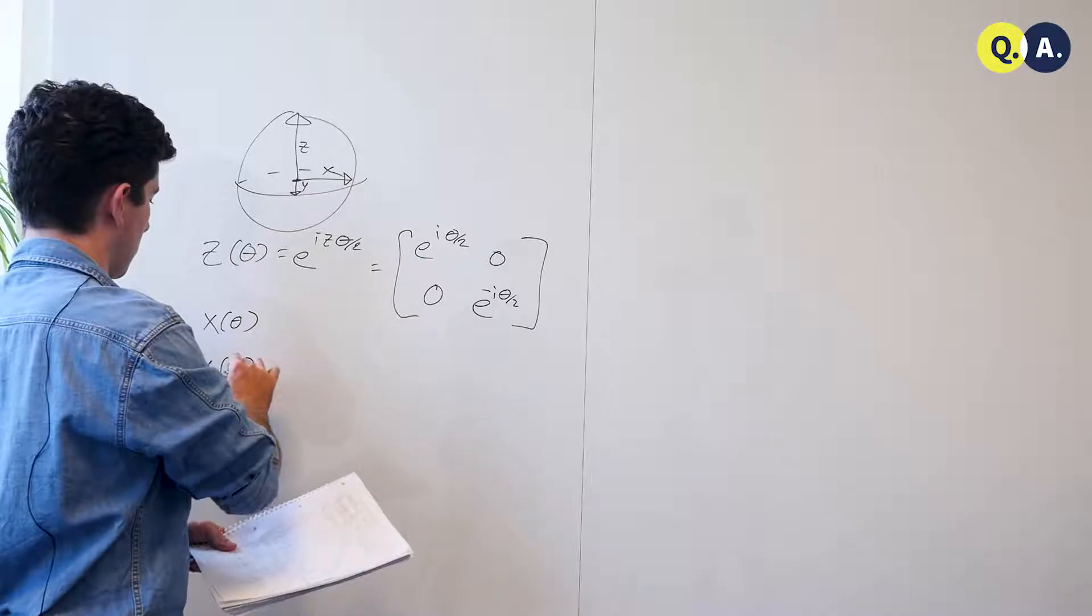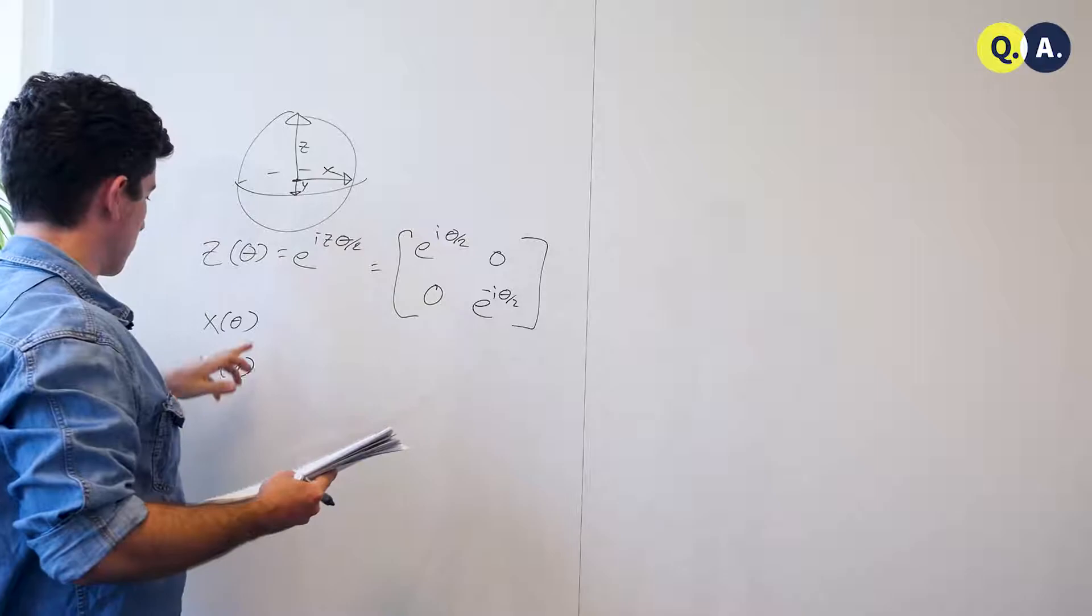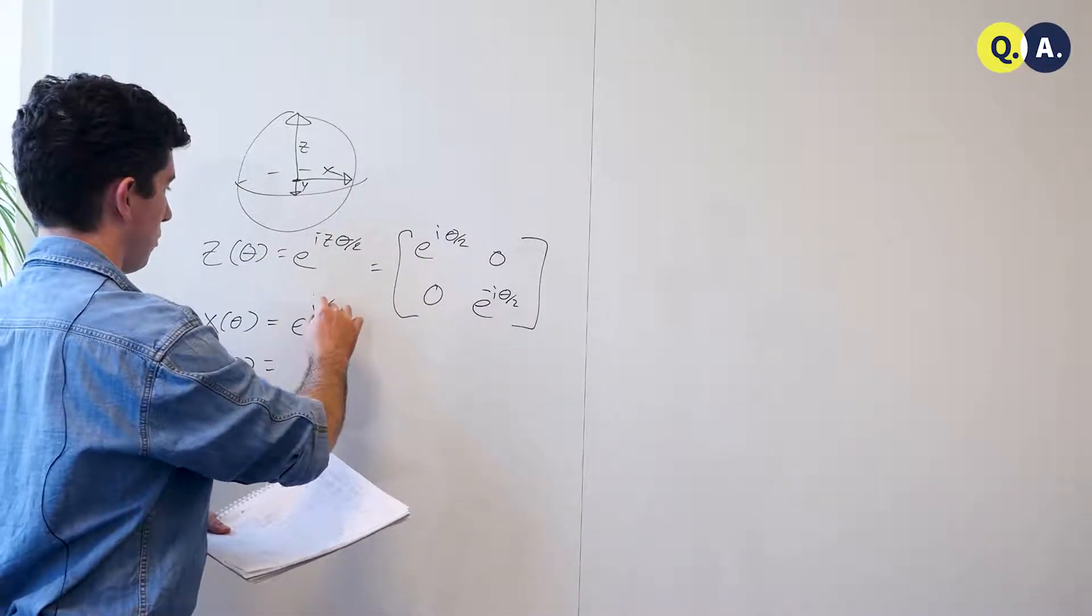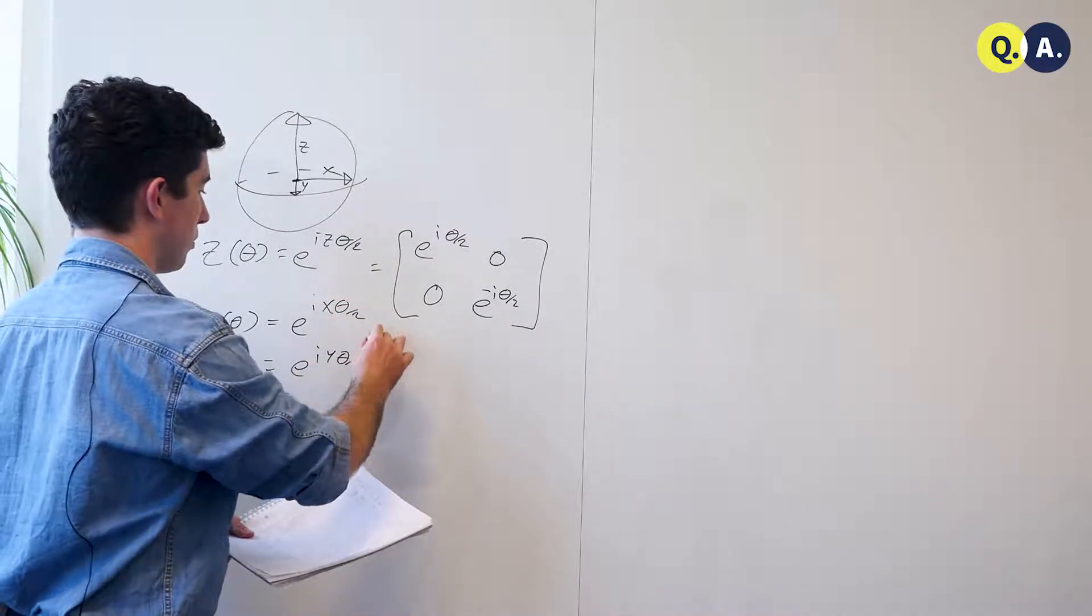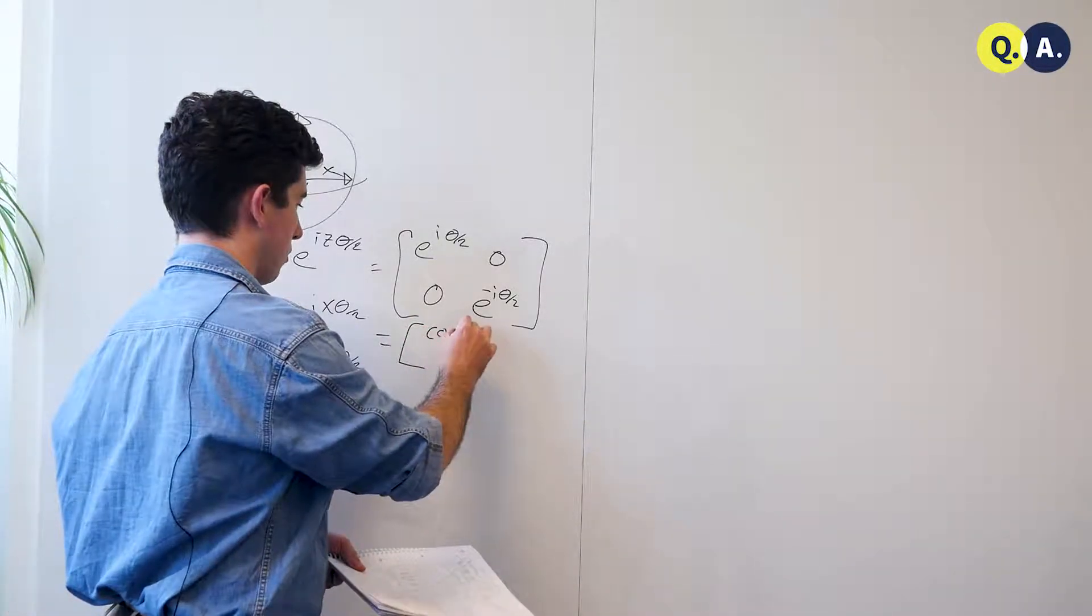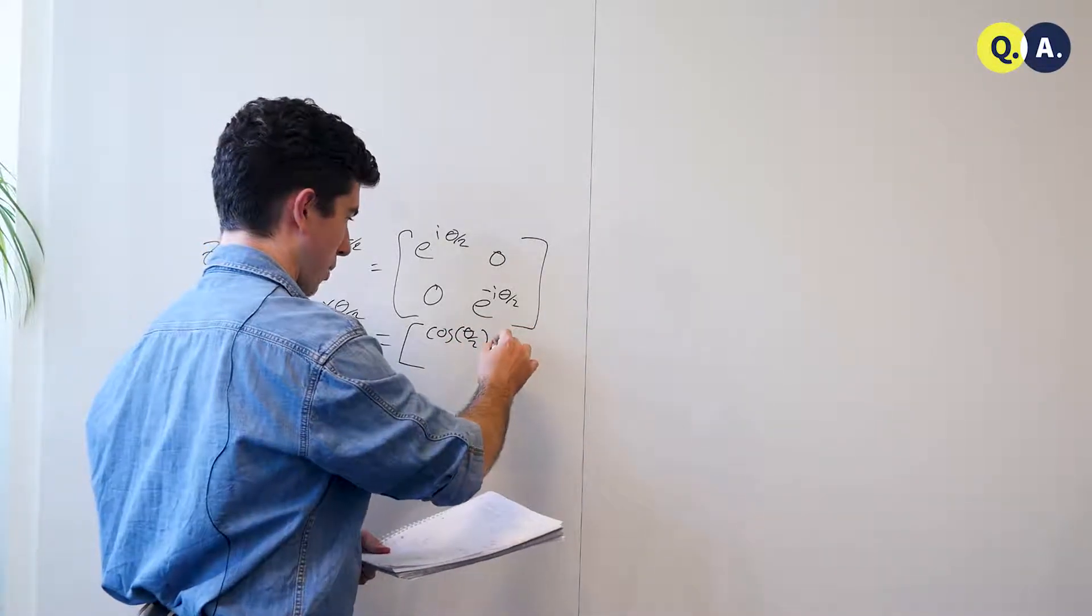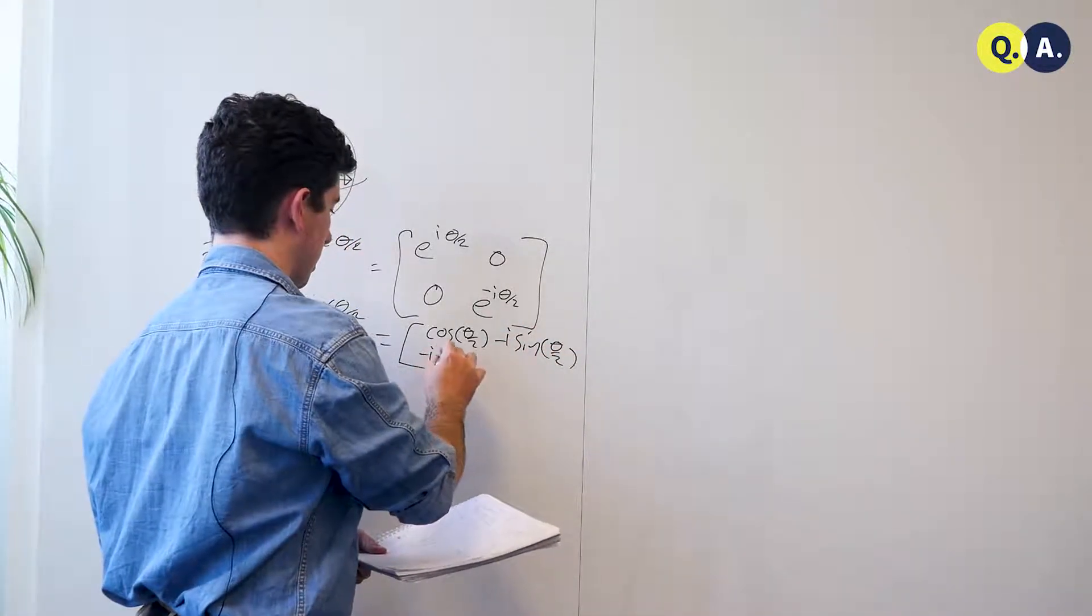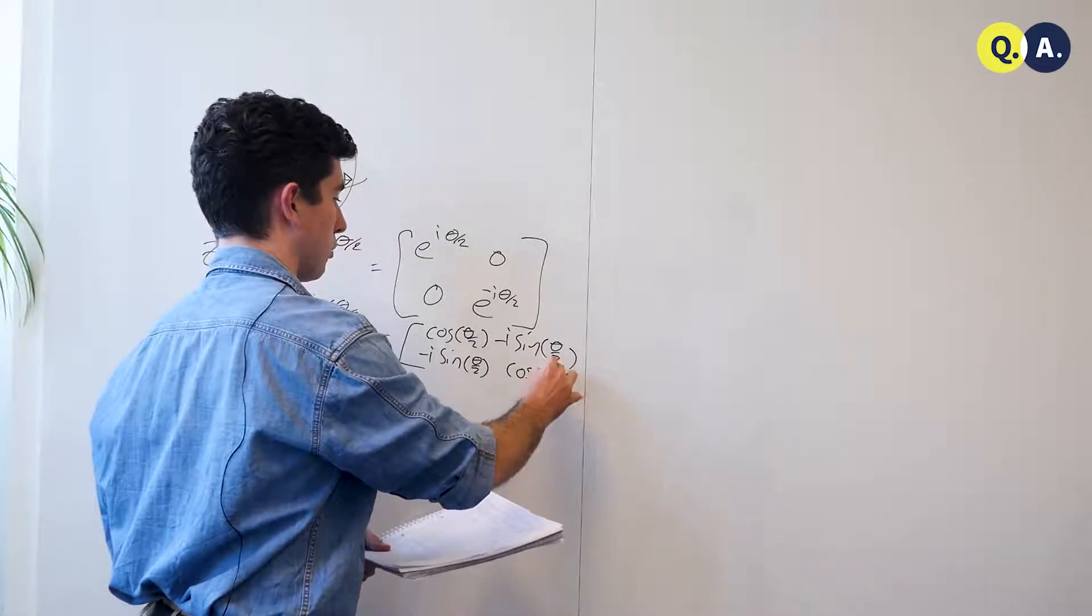E to the i x theta over 2, e to the i y theta over 2, and this guy is equal to cosine of theta over 2, minus i sine of theta over 2, minus i sine theta over 2, cosine of theta over 2.